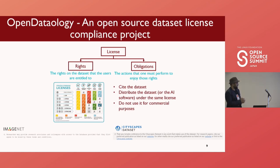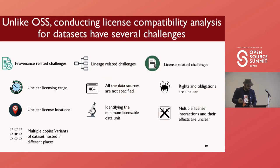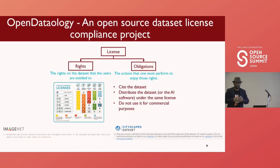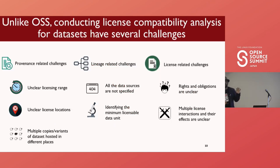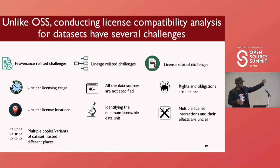For example, a right could be something like you're allowed to distribute the data; however, if you distribute the data, it must be under the same license. This is not new — everyone who's been using open source is aware that licensing has been going on for a long time. However, for datasets, there are unique sets of challenges that make applying the methods we know from open source directly quite hard — specifically provenance-related, lineage-related, and license-related challenges.